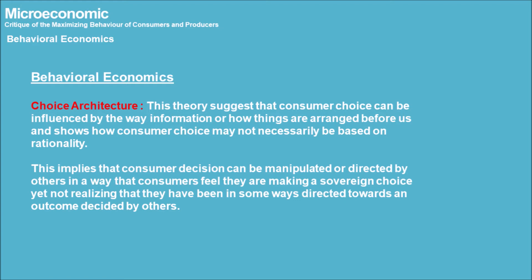Behavioral Economics — Choice Architecture. This theory suggests that consumer choice can be influenced by the way information or things are arranged before us, and shows how consumer choice may not necessarily be based on rationality. This implies that consumer decisions can be manipulated or directed by others in a way that consumers feel they are making a sovereign choice, yet not realizing they have been directed towards an outcome decided by others.